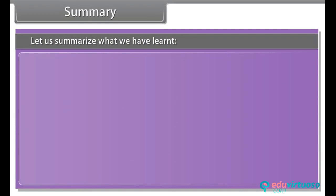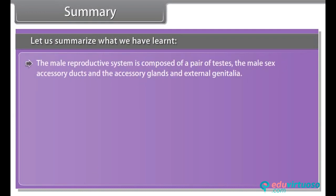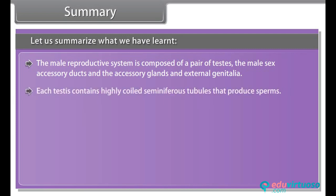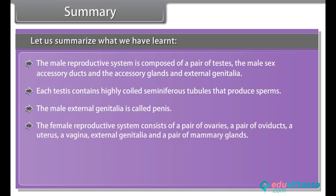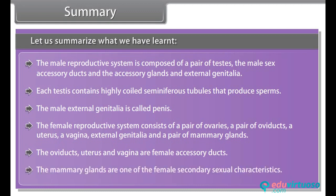In summary, the male reproductive system is composed of a pair of testes, the male sex accessory ducts, accessory glands, and external genitalia. Each testis contains highly coiled seminiferous tubules that produce sperms. The male external genitalia is called the penis. The female reproductive system consists of a pair of ovaries, a pair of oviducts, a uterus, a vagina, external genitalia, and a pair of mammary glands. The oviducts, uterus, and vagina are female accessory ducts. The mammary glands are one of the female's secondary sexual characteristics.